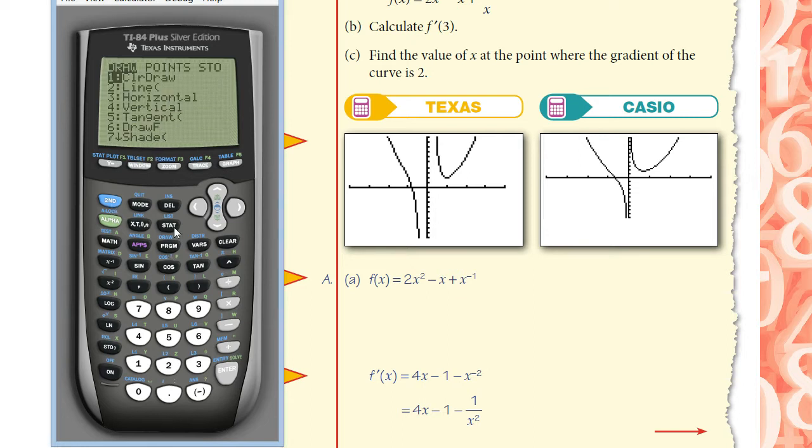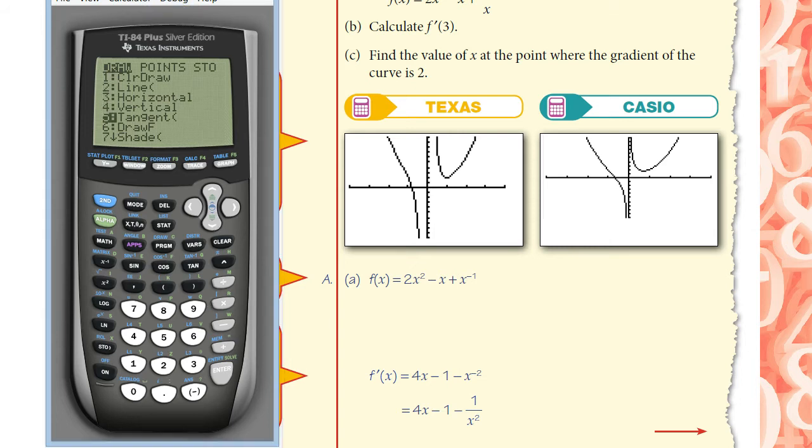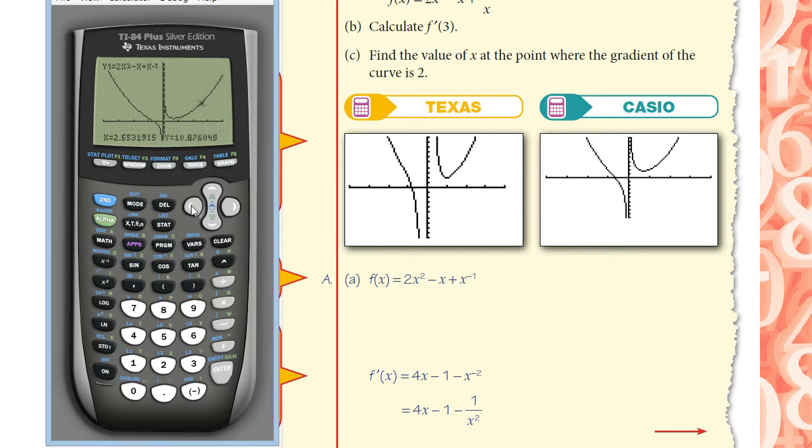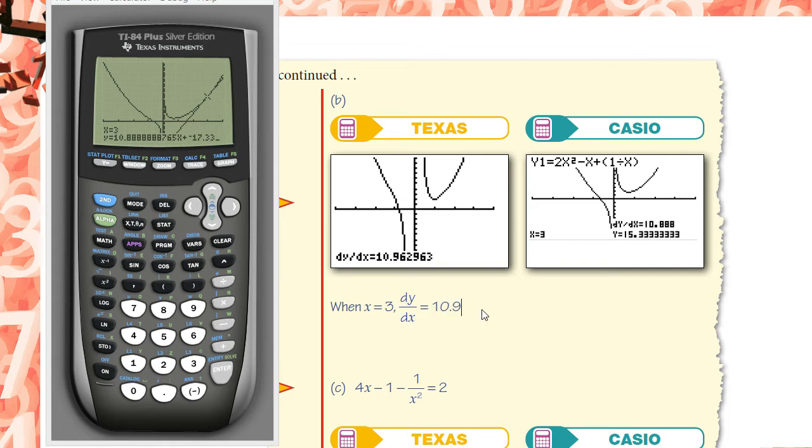You can also go into draw menu and then have the tangent drawn. Again, it's the same thing. I can move the crosshair or I can hit 3, draw the tangent where x equals 3. There it is. And you can see where x equals 3, it will tell you the equation of the tangent. It is 10.8888x minus 17.33 something. And this is the number 10.9. That is the gradient. This is in the gradient intercept form. So you've calculated the gradient in three different ways.